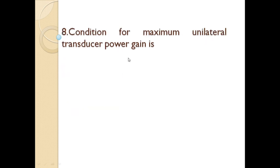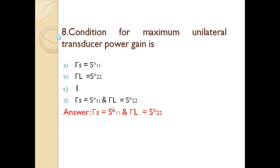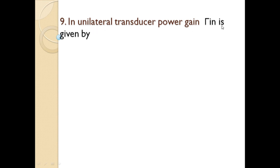Question 8: The condition for maximum unilateral transducer power gain is — option A: γS = S11*; option B: γL = S22*; option C: one of the two; option D: γS = S11* and γL = S22*. For the unilateral case, applying complex conjugate matching on both source and load sides gives the answer: option D — γS = S11* and γL = S22*.